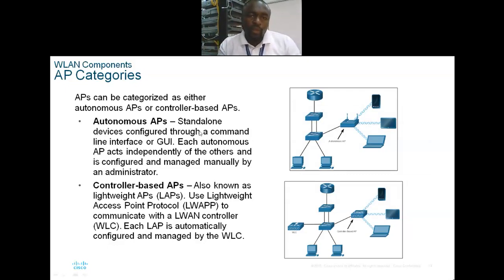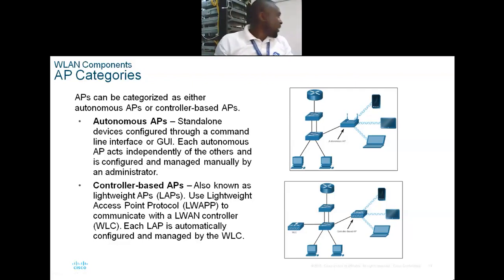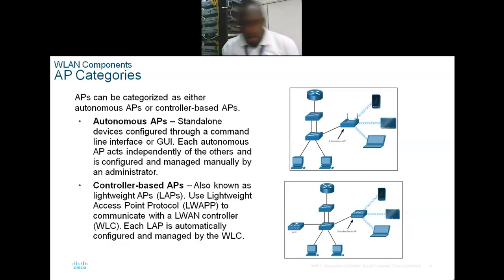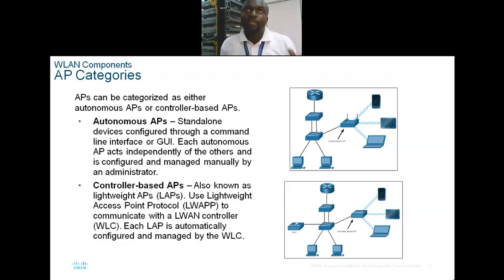The first AP category is the autonomous AP — a standalone device configured through a command line interface or GUI. It acts independently of other APs. If you pick an access point and configure it, that AP is independent of any other access point.